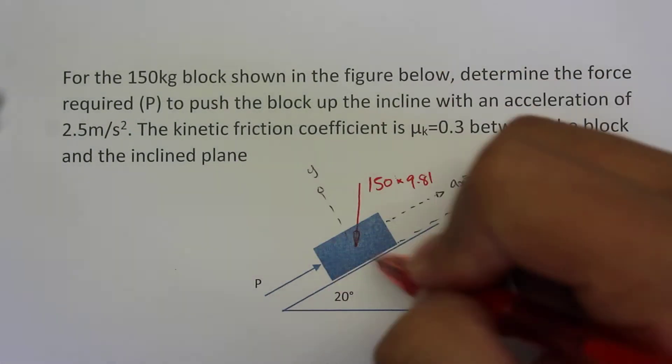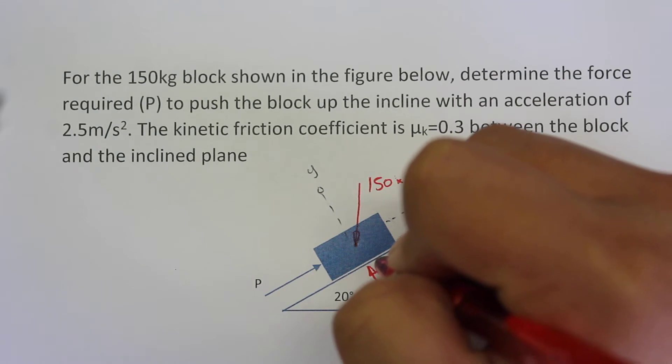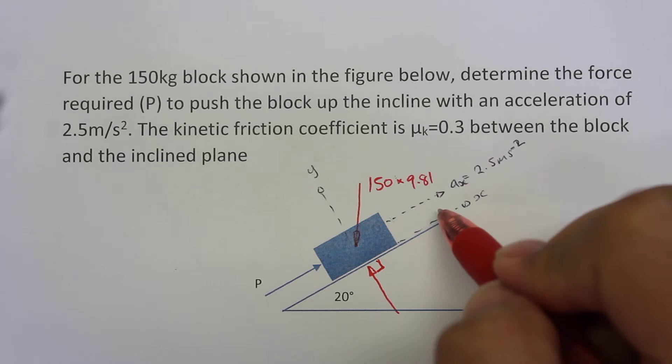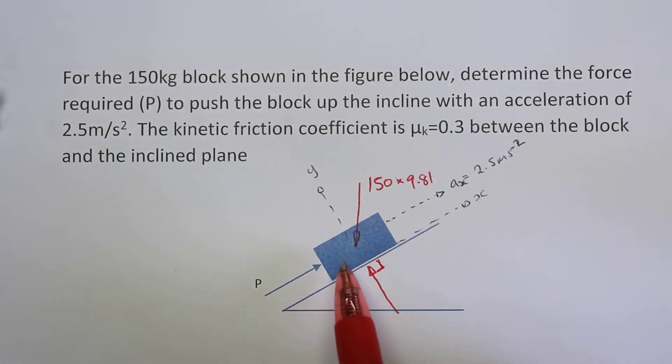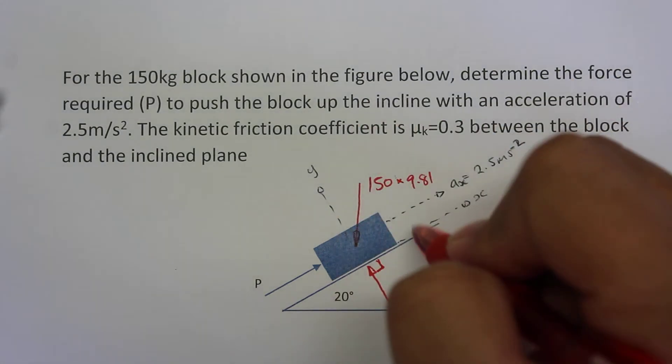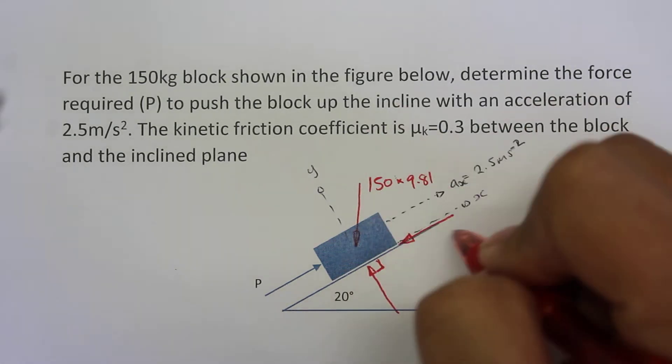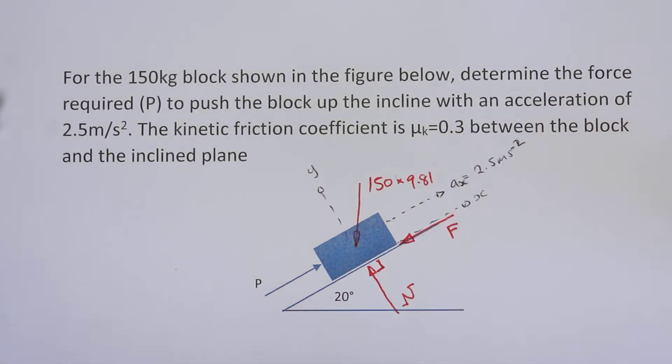Now the ground will provide a normal reaction force. This will be at right angles to the ground surface. And we will have a friction force which acts in the direction opposite to our motion. So the block is moving towards the right, so our force of friction will act towards the left. So this will be F, and we'll have a normal reaction force here.